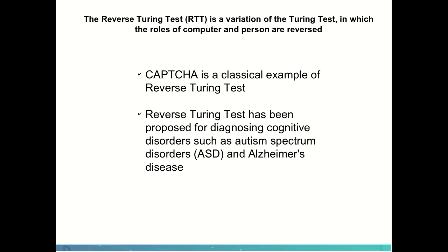Our idea is to use a reverse Turing test for knowledge assessment. A reverse Turing test is a variation of the regular Turing test where the roles of human and computer are reversed. CAPTCHA is a classical example — our goal is to check whether the agent on the other side of the screen is a person or a computer. Another version of the reverse Turing test was used for diagnosing cognitive disorders: people play games against a computer, and by measuring their results we can understand if they possess certain cognitive skills that are lacking in certain disorders.